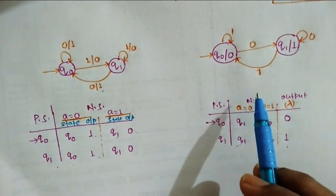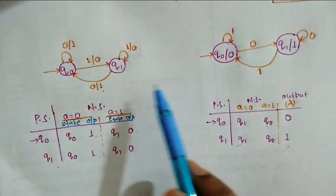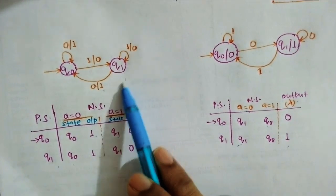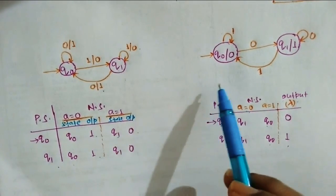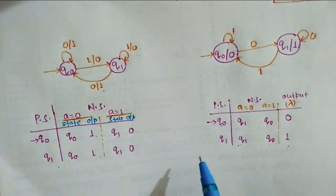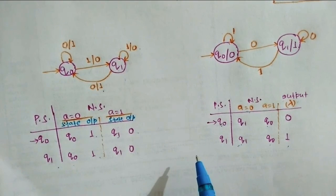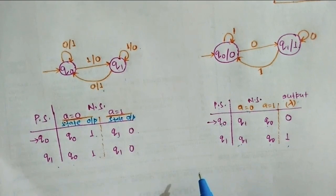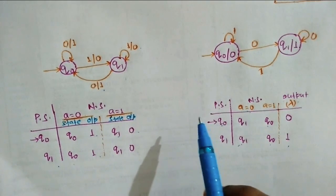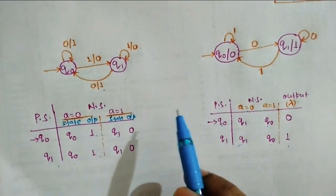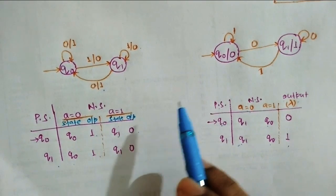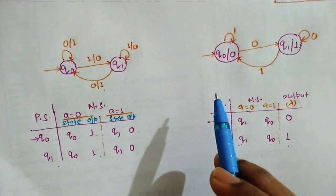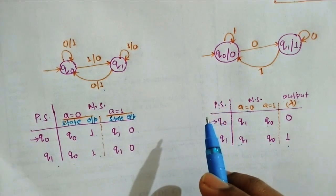This is the way to represent Mealy and Moore models by transition diagram and transition table. Hope you understand the basic concepts of these two models. In the coming video lecture, we will understand how to convert from one model to another. Thank you so much.